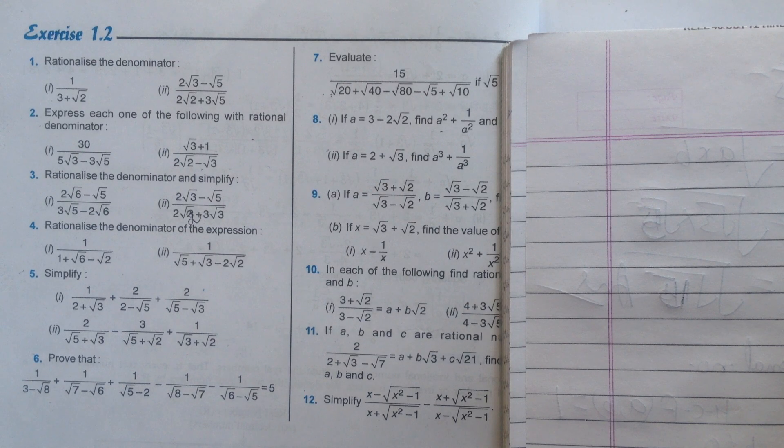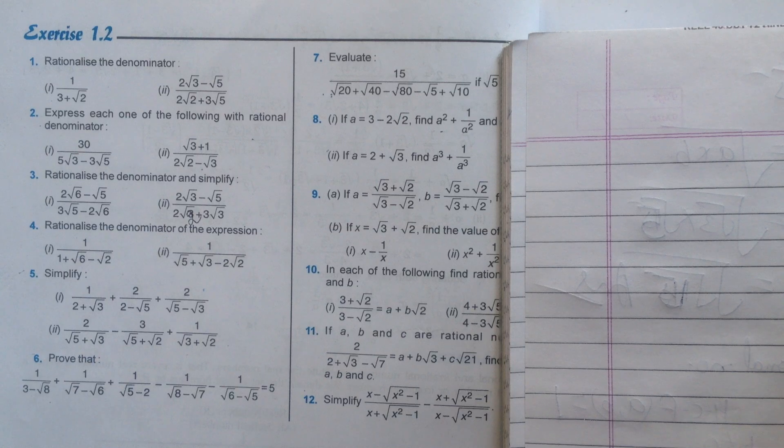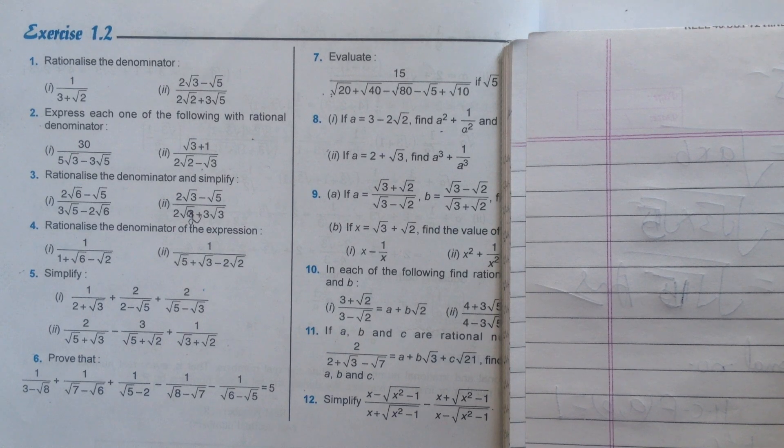To always wear a mask or face cover, especially when in public places, to maintain a minimum distance of 6 feet from others, to wash my hands frequently and thoroughly with soap and water. Together we will win this fight against COVID-19. So students, today we will start exercise number 1.2.